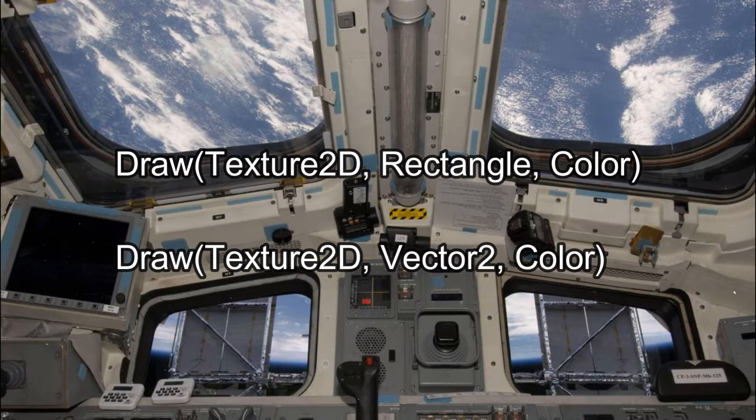The simplest two draw methods take a texture, a position, and a color. One uses a rectangle for positioning while the second uses a vector 2. We have used the rectangle one prior for our Pong clone. Both assume that you want to draw the entire texture you pass to it and tint it the color you give it. If you don't want to tint your image, white is the best color of choice.